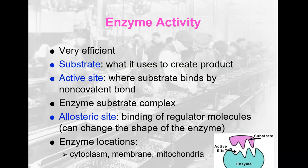The active site is the site where the substrates will bind by non-covalent bonding, meaning it is not a permanent bond. It is kind of like a post-it bond — it sticks long enough for the reaction, but then it can let go really easily. When it binds, it forms the enzyme-substrate complex. The allosteric site is a site where regular molecules can bind, and it's away from the active site. When a molecule binds on the allosteric site, it can change the shape of the enzyme, which then changes the shape of the active site and makes it inactive.